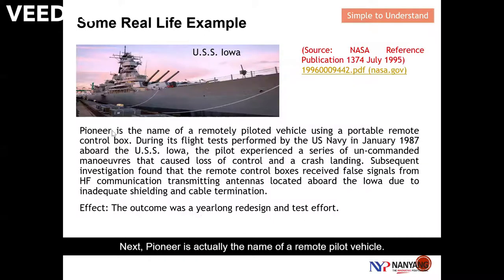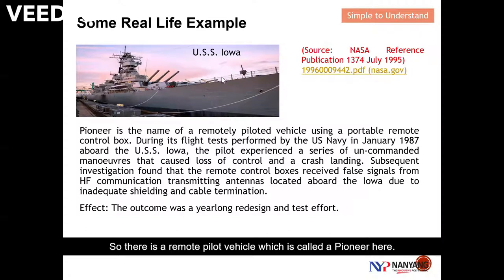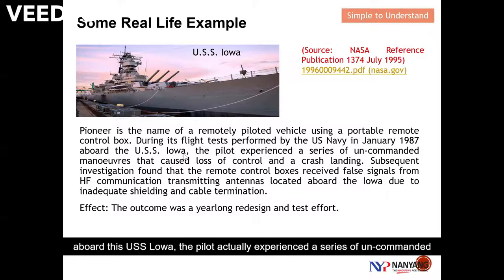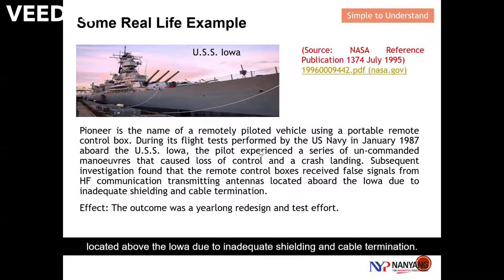The Pioneer is the name of a remote-piloted vehicle. During a flight test performed by the U.S. Navy in January 1987 on board the USS Iwo Jima, the pilot experienced a series of uncommanded maneuvers that caused loss of control and a crash landing. Subsequent investigation found that the remote control box received false signals from the HF communication transmitting antenna located above the lower deck, due to inadequate shielding and cable routing.